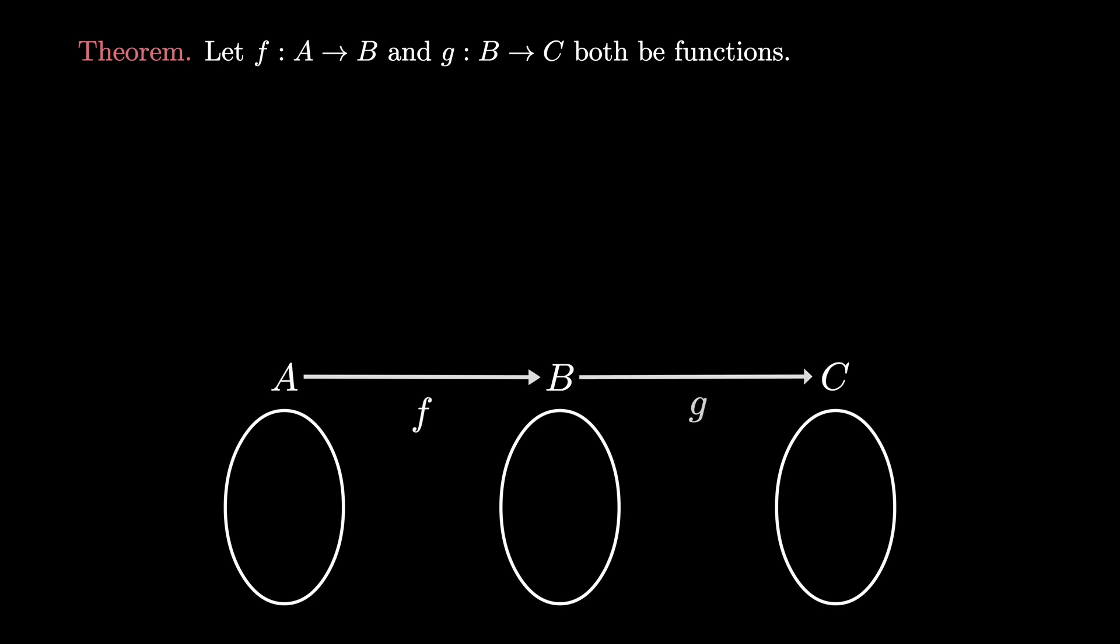Why don't you have a go at this yourself now? Imagine that A, B, and C are three sets, and that f is a function from A to B, and g is a function from B to C. Suppose that g is injective, and g∘f is surjective. Prove that f is surjective.